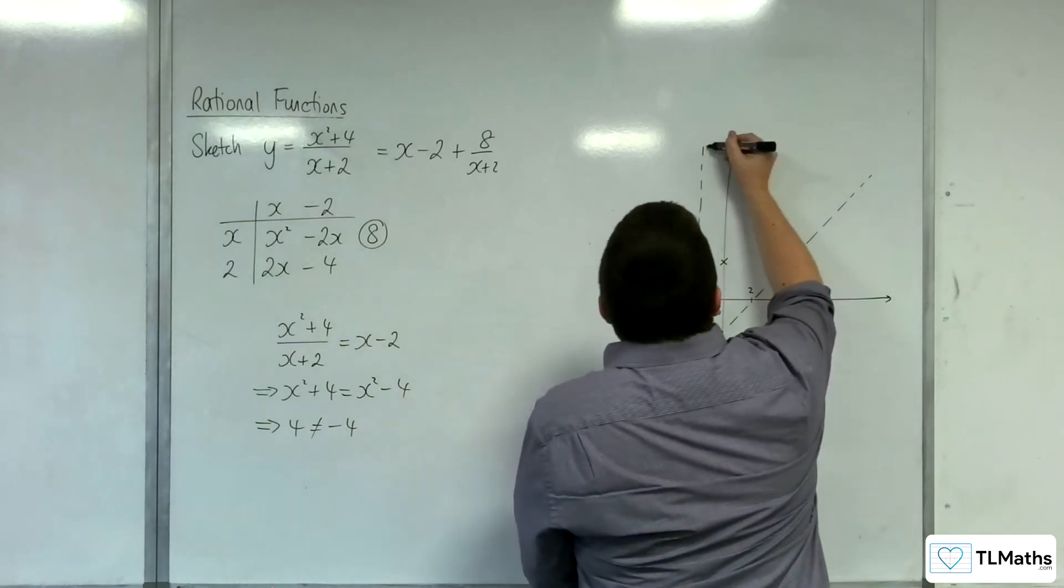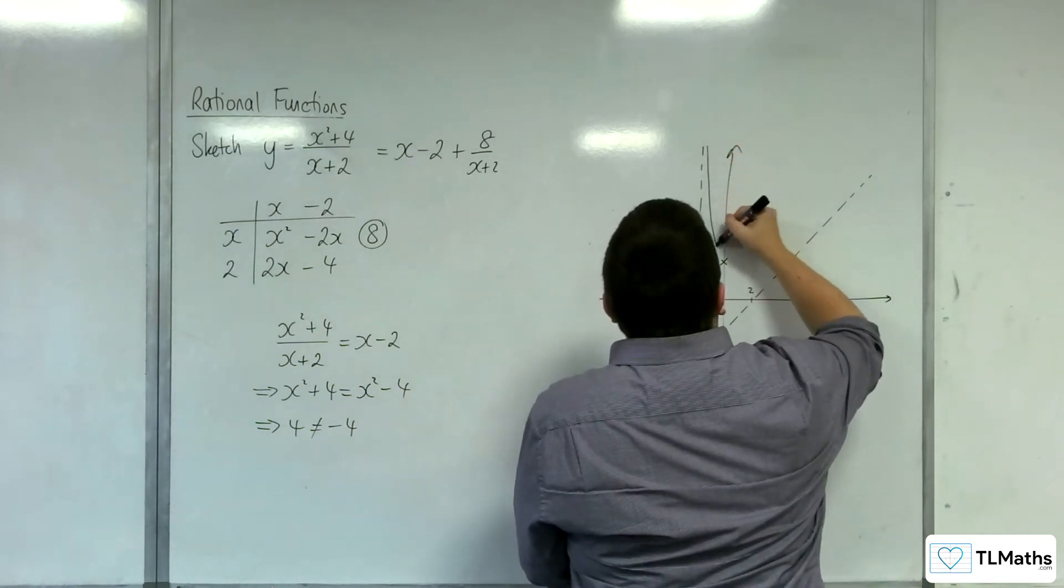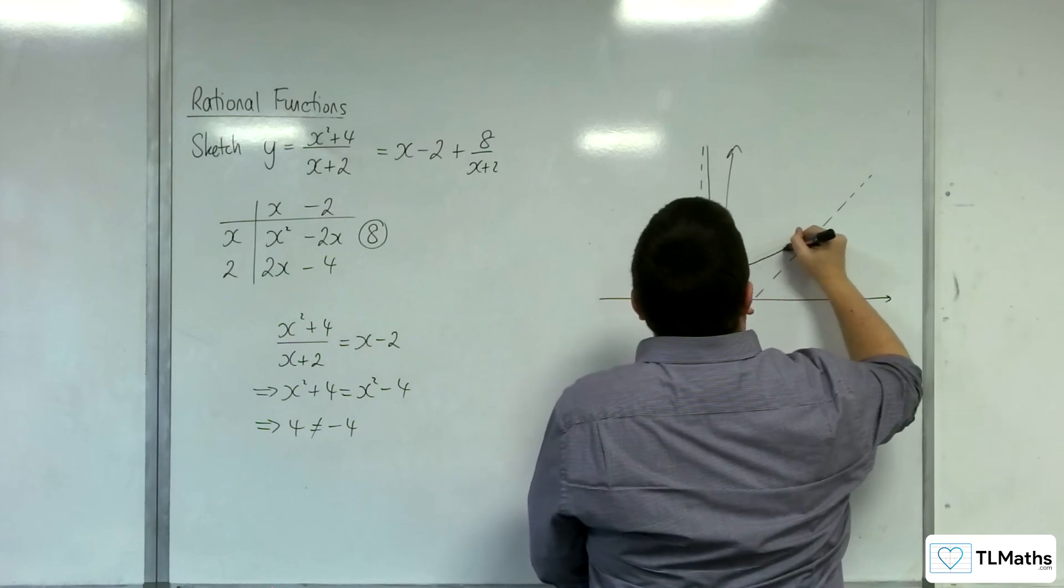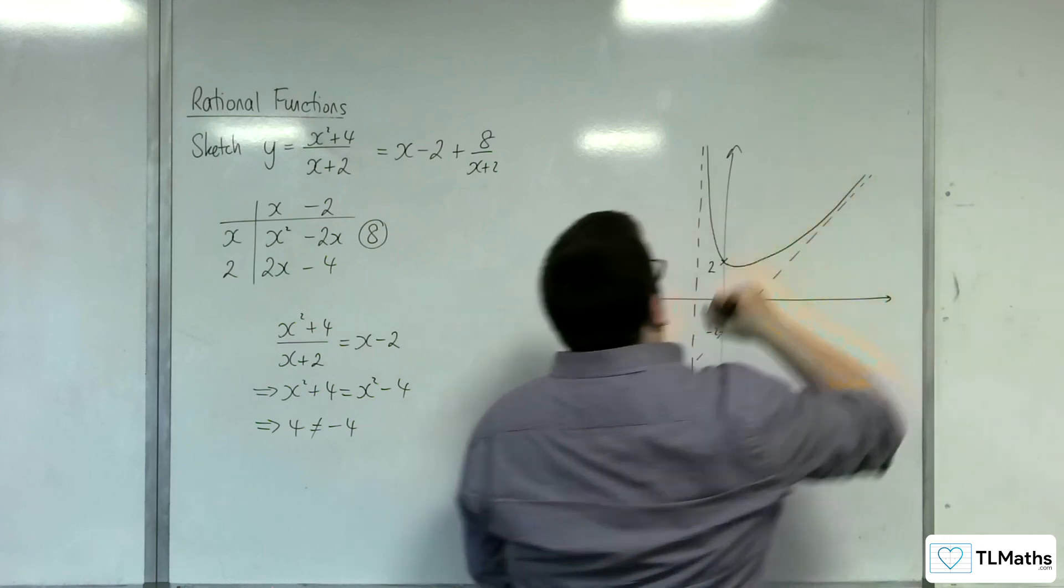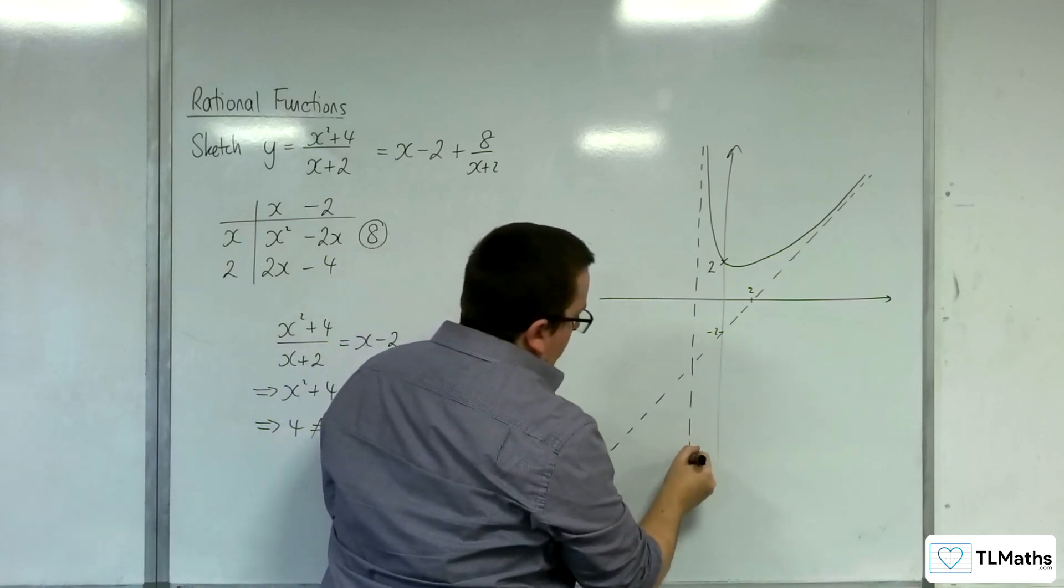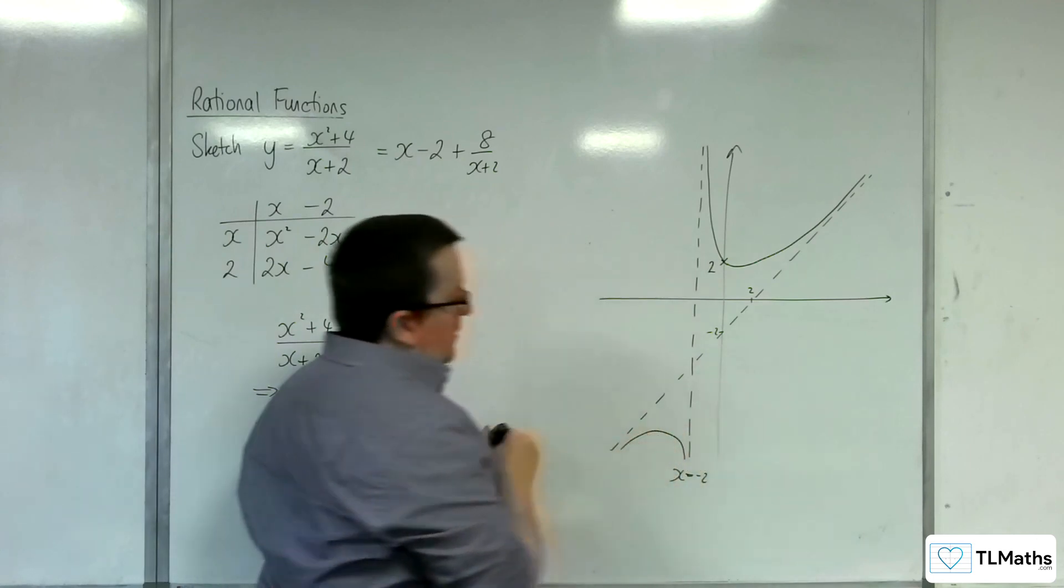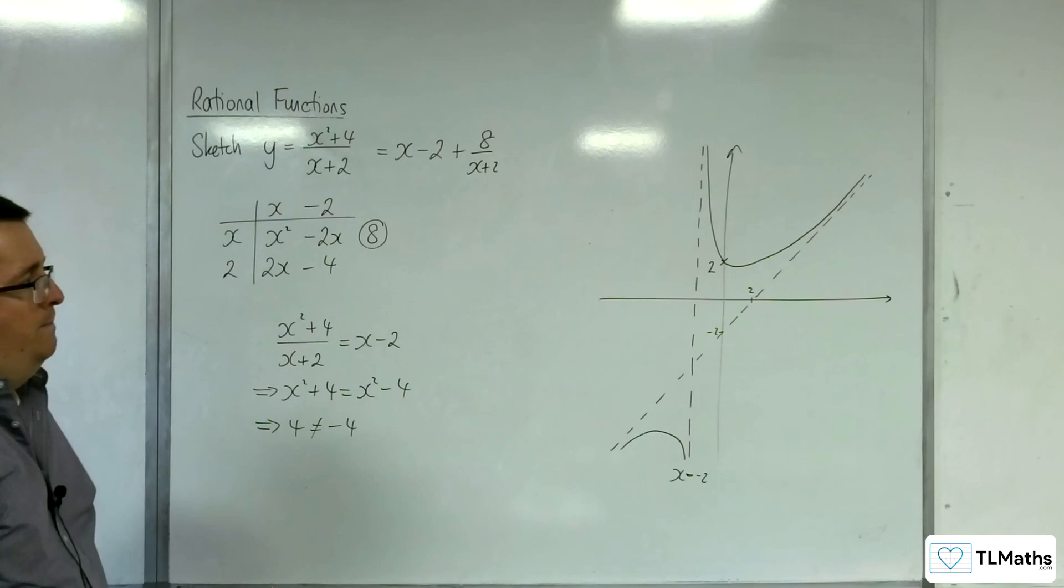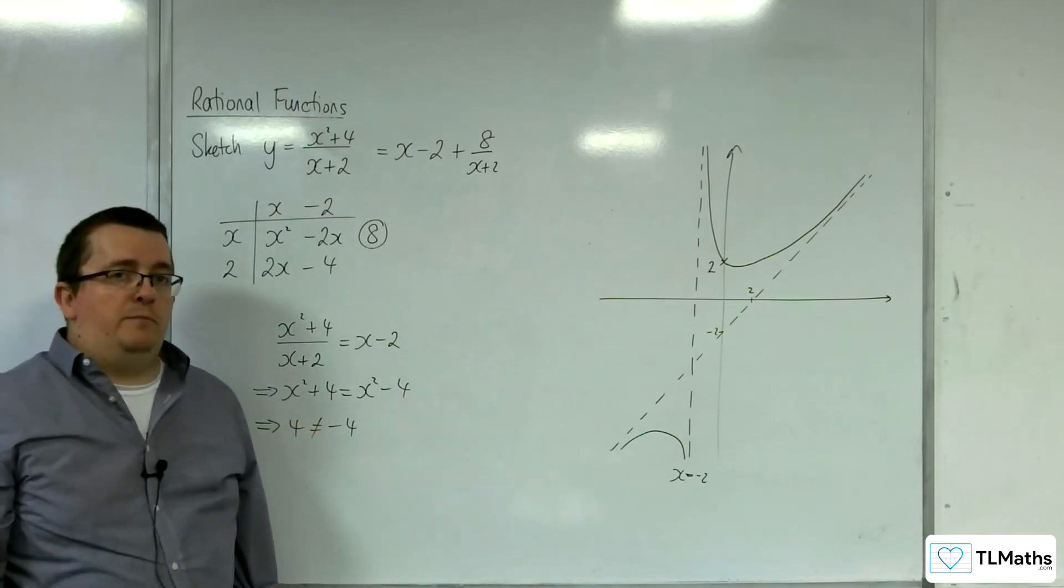So that must mean that the curve comes down from here through 2, and then must tend towards the oblique asymptote, and in a similar way it must tend towards those two lines there as well. And so that is what our curve must look like.